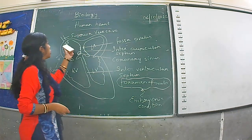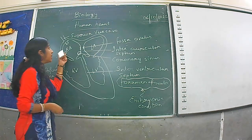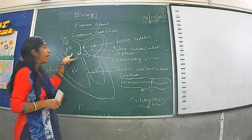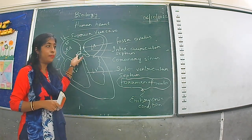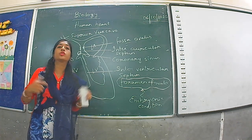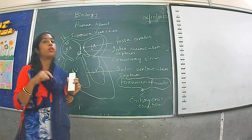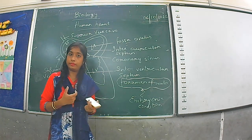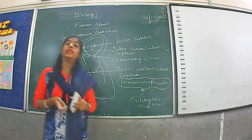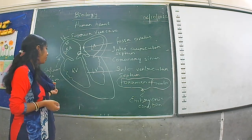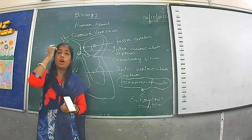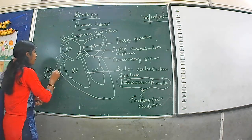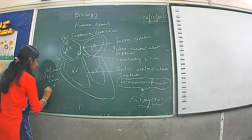Since the superior vena cava is placed at an angle, when the right auricle contracts it automatically gets closed, preventing any backflow. Therefore no valve is needed. In the inferior vena cava, the valve present is known as the eustachian valve. In the coronary sinus, the valve present is known as the thebesian valve.